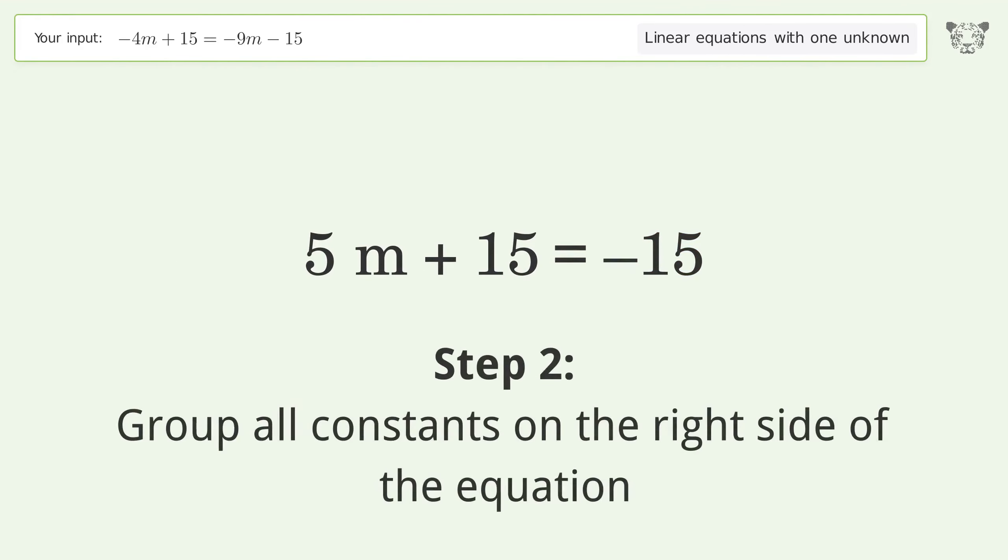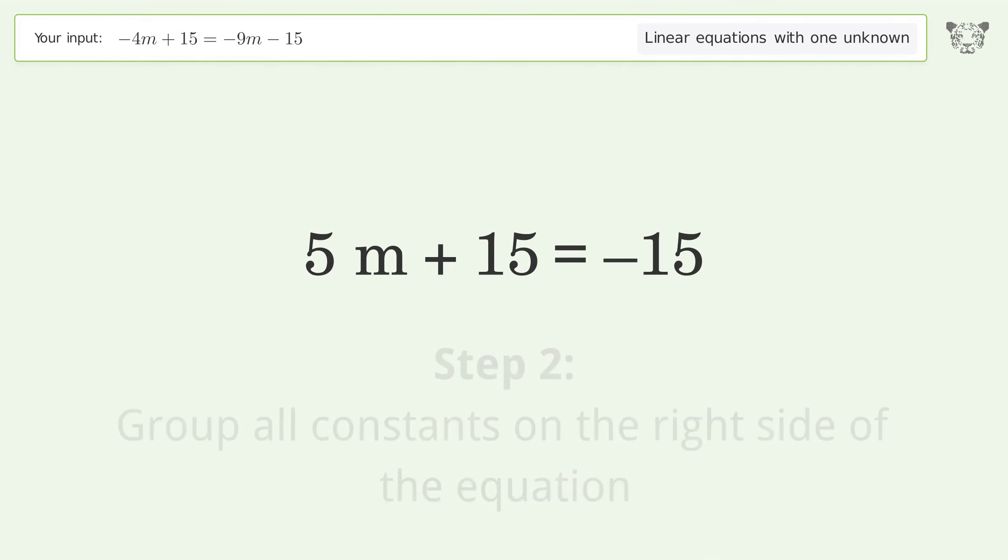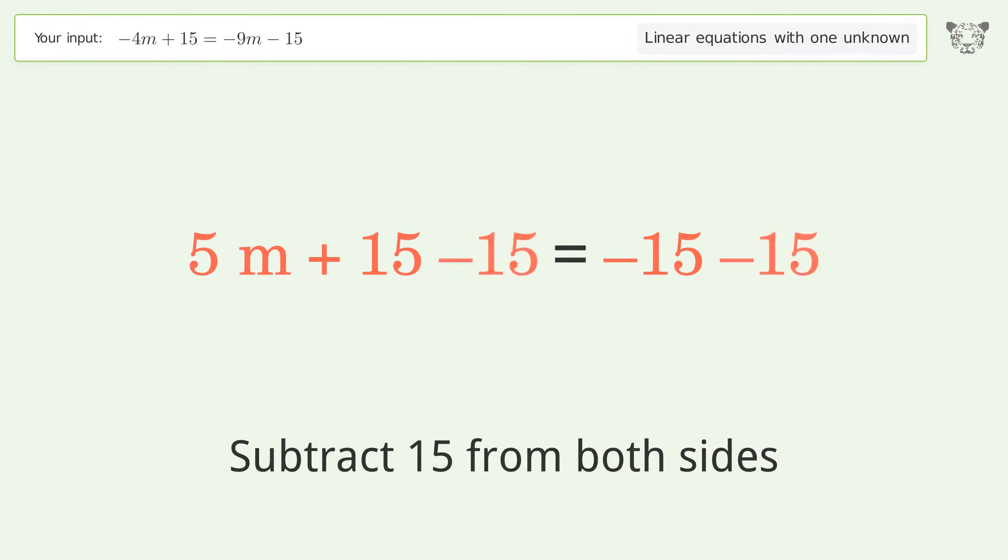Group all constants on the right side of the equation. Subtract 15 from both sides. Simplify the arithmetic.